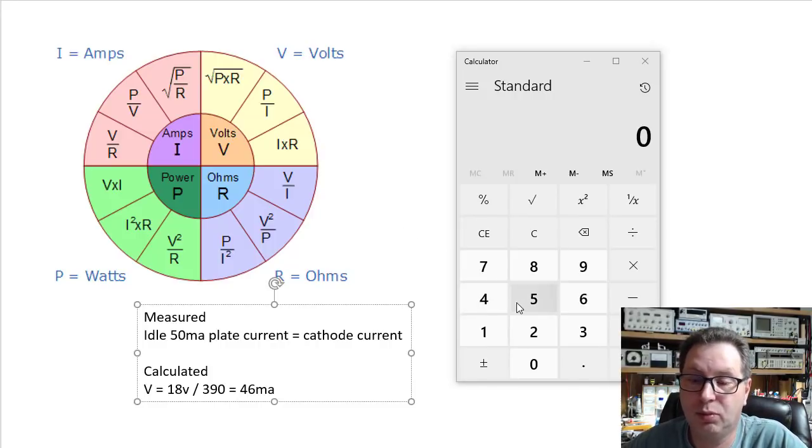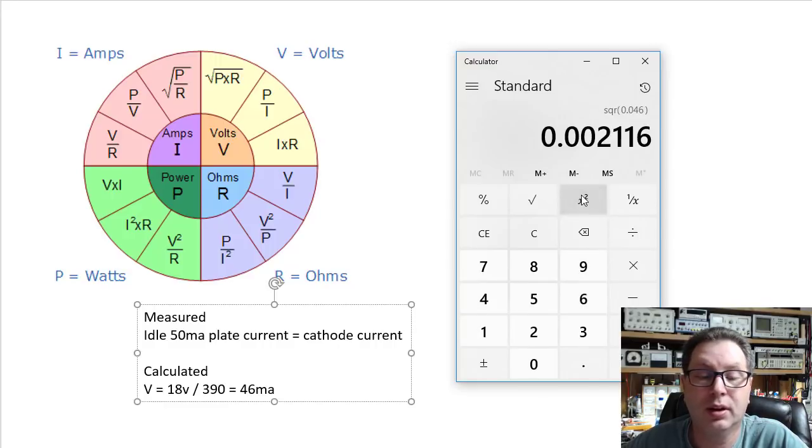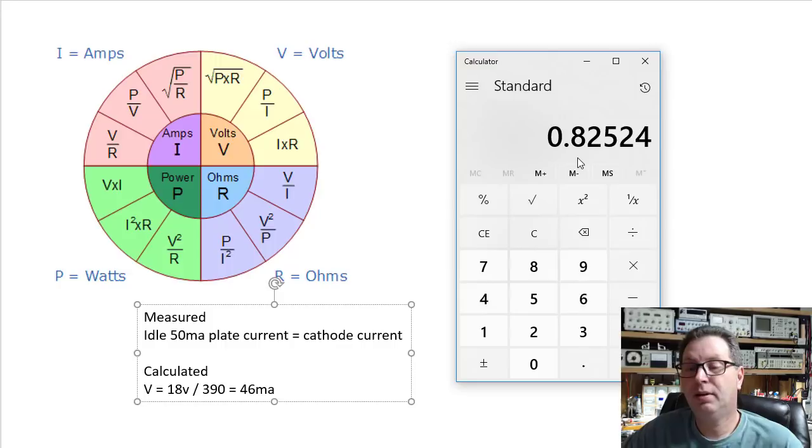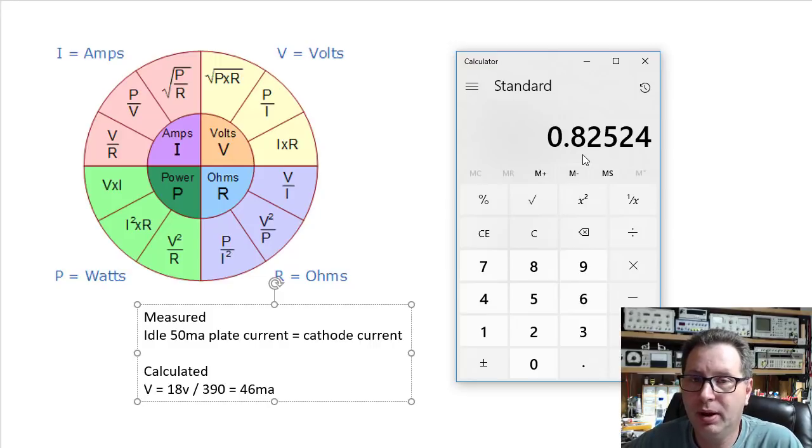So let's do a little math here. If we said 0.046 squared times 390, that would give us about 0.825. So 825 milliwatts of power that this cathode resistor would be dissipating at idle, right? But what if this thing via driven went up to say 100 or 120 milliamps going through the plate? So then you would have 0.12 squared times 390 and that puts you at 5.616 watts.